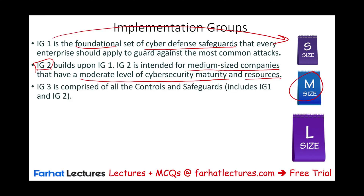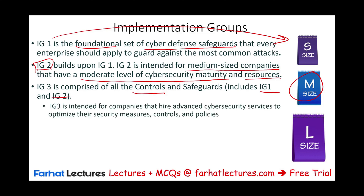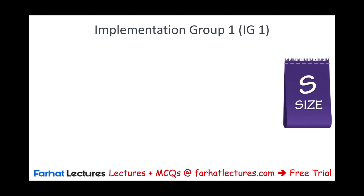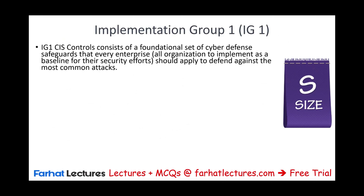Then we have IG3, which comprises all controls and safeguards — that is IG1, IG2, plus additional IG3 resources. IG3 is intended for companies that hire advanced cybersecurity services to optimize their security measures, controls, and policies. Many organizations might be satisfied with IG1 and IG2, while others may aspire to achieve the advanced security posture provided by IG3. IG3 is the highest level — you typically need the resources and are a large company.